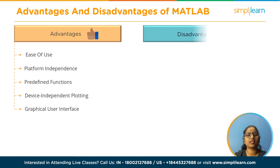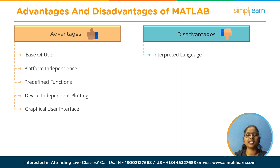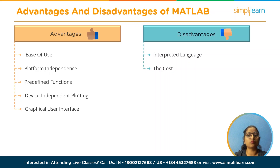The last advantage is the graphical user interface. MATLAB includes a tool that allows a programmer to interactively design a graphical user interface for their program. When it comes to disadvantages, there are two major ones. First, MATLAB is an interpreted language and may execute more slowly than compiled languages — this can be addressed by properly structuring the MATLAB program. Second, the cost: a complete copy of MATLAB is 5 to 10 times more expensive than a traditional C compiler, making it comparatively costly for individual engineers or scientists.